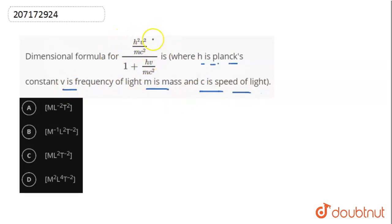So here is the thing. We can analyze it, and these are the options: option A, option B, option C, and option D. Let's analyze this term. What is the numerator? The numerator is H square, frequency square, divided by M C square.